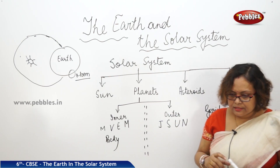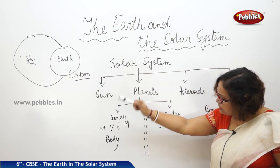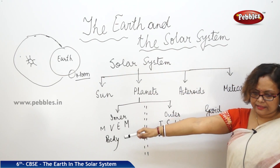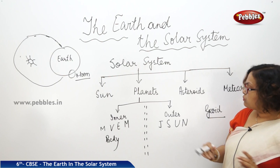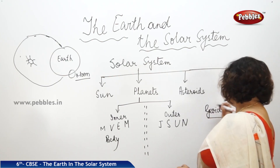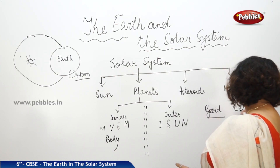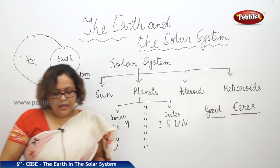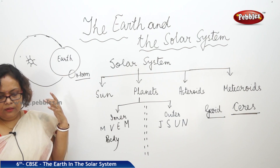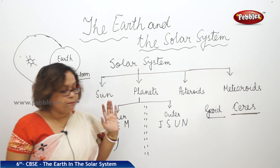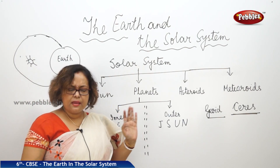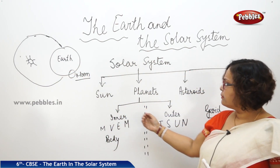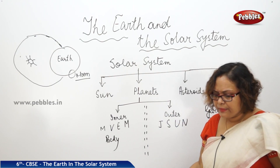These asteroids are revolving around the sun just as planets do. The largest asteroid we have information about is named Ceres. Scientists are of the view that asteroids are parts of planets, and they may have been created many years back when parts of these planets came out and formed this belt.